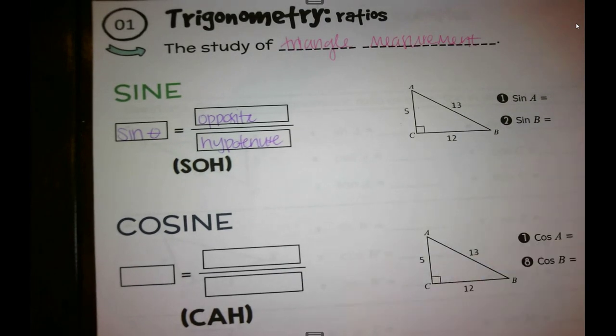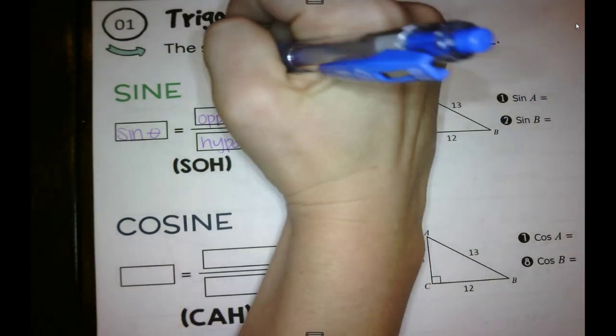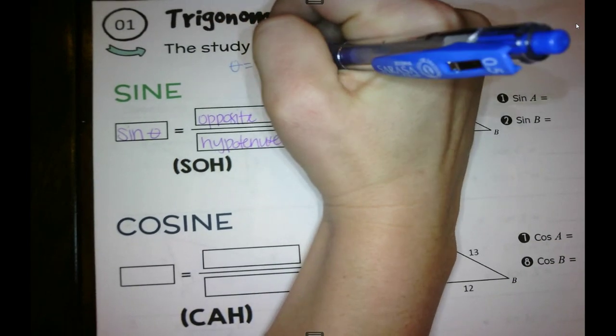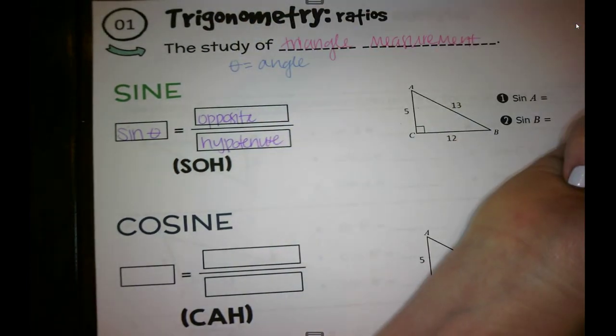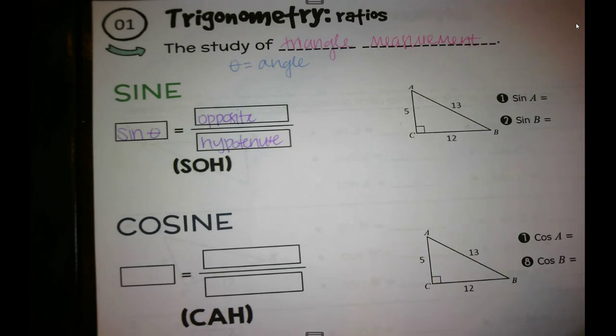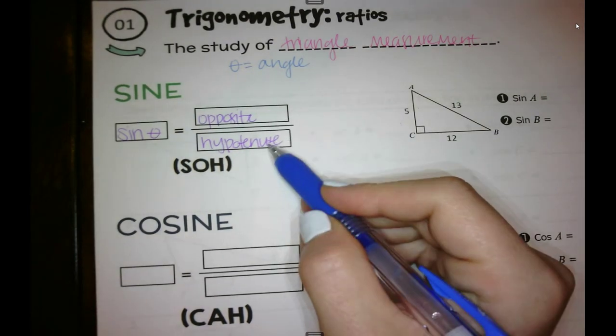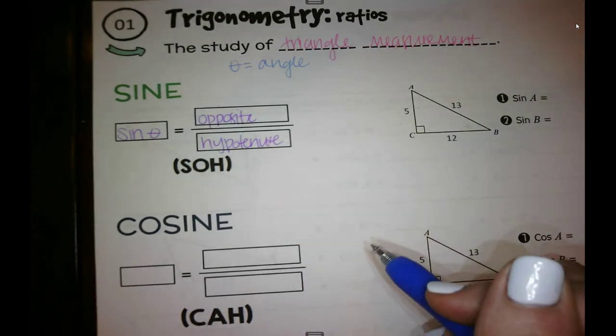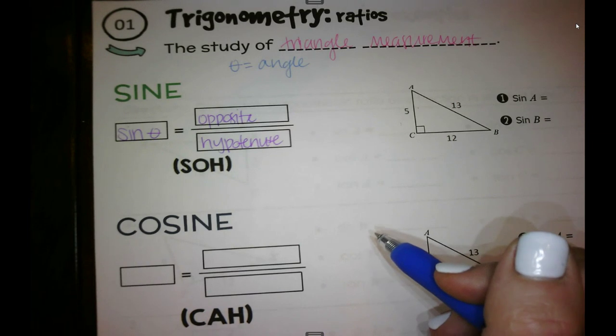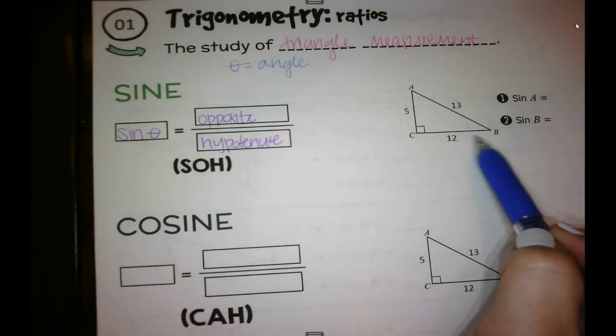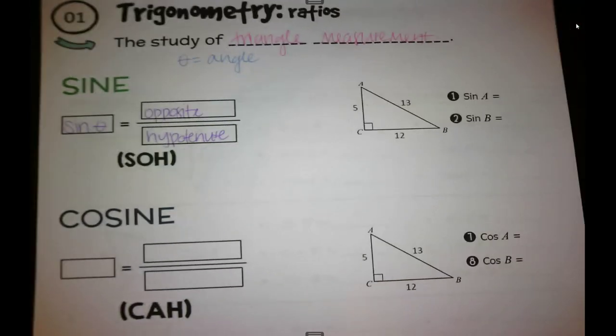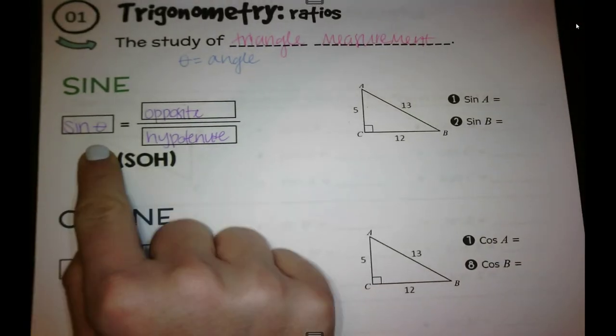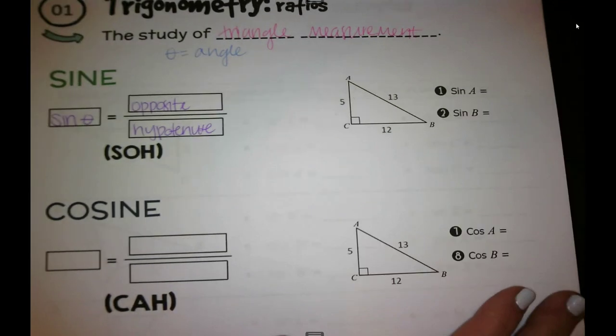So theta equals an angle. And we're talking opposite, hypotenuse, and then in a second we'll talk about adjacent. We're talking about the outside lengths of the triangle. Okay, so let's see what this means. Sine of an angle is opposite over hypotenuse.